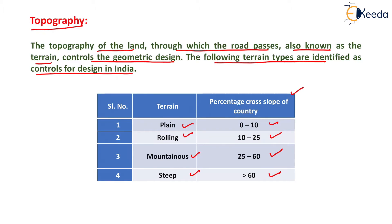If the cross slope is large, an increase in the radius of curvature of the road will lead to an increase in construction cost. Hence, design speed is reduced so that the radius of the curve reduces, leading to a reduction in the cost of construction. Thank you very much, students.